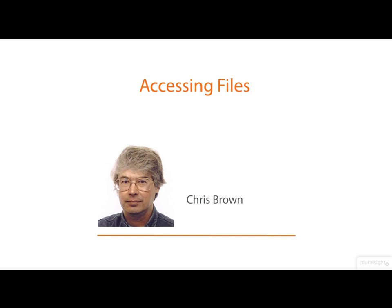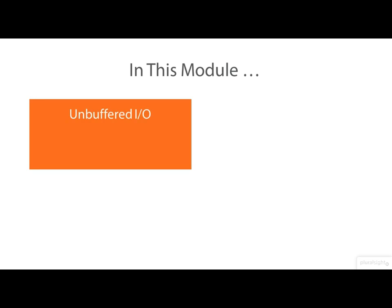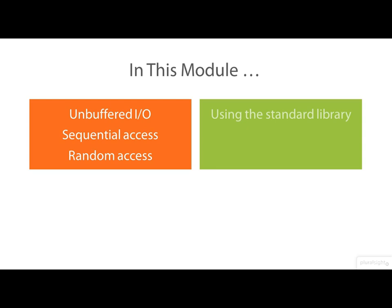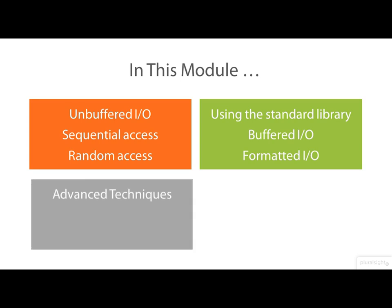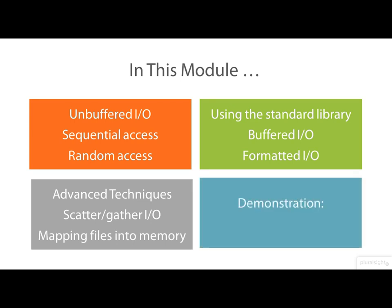Hello, welcome to Pluralsight and to this course on Linux systems programming. I'm Dr. Chris Brown and this module is called 'Accessing Files.' In this module I'm going to start by talking about the low-level unbuffered system calls that give us sequential access to data in a file, then we'll look at seeking into a file to give us random access. Next we'll look at the buffered IO and formatted IO routines that are part of the standard C library. We'll also take a brief look at scatter-gather IO and memory mapping.